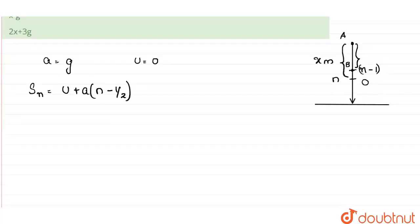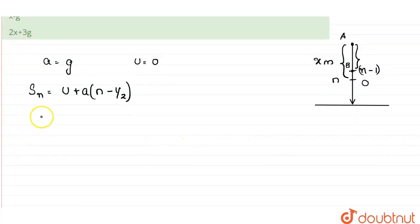So here it is given to us that in the nth second, the body travels x meters. So S_n is equal to, u is 0, the acceleration a is equal to g, g into n minus half is equal to x. This could be written from the data given to us.